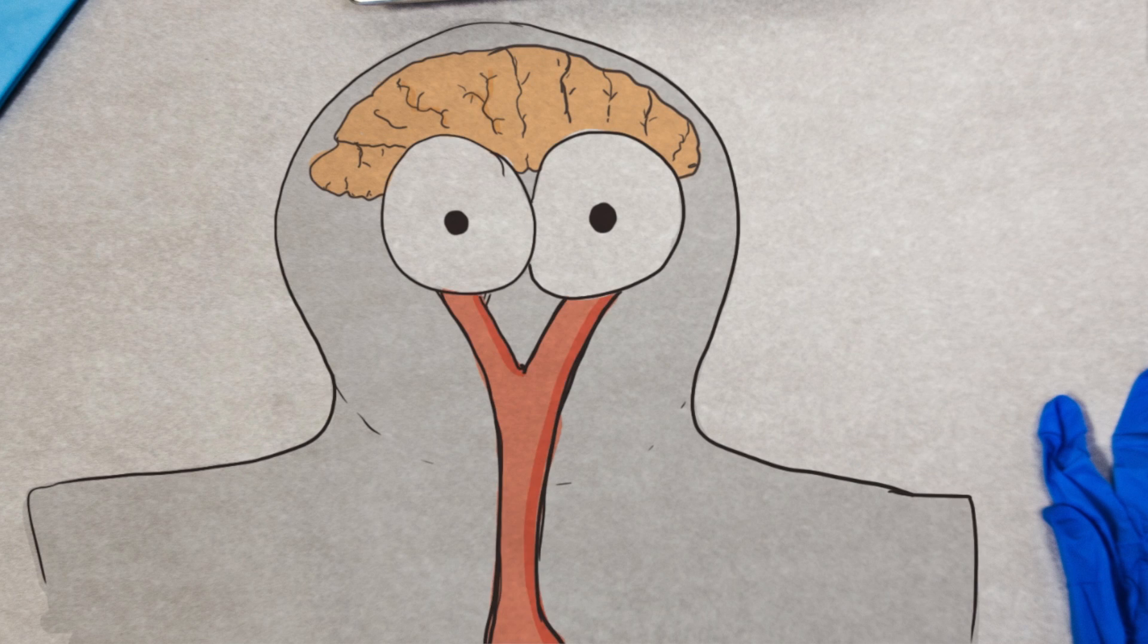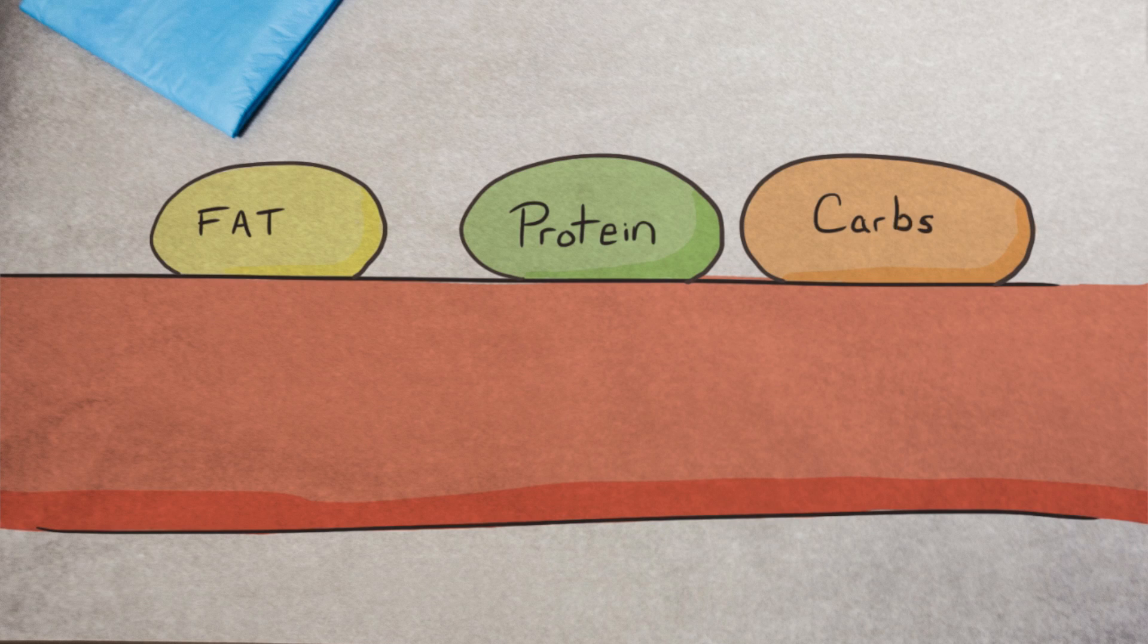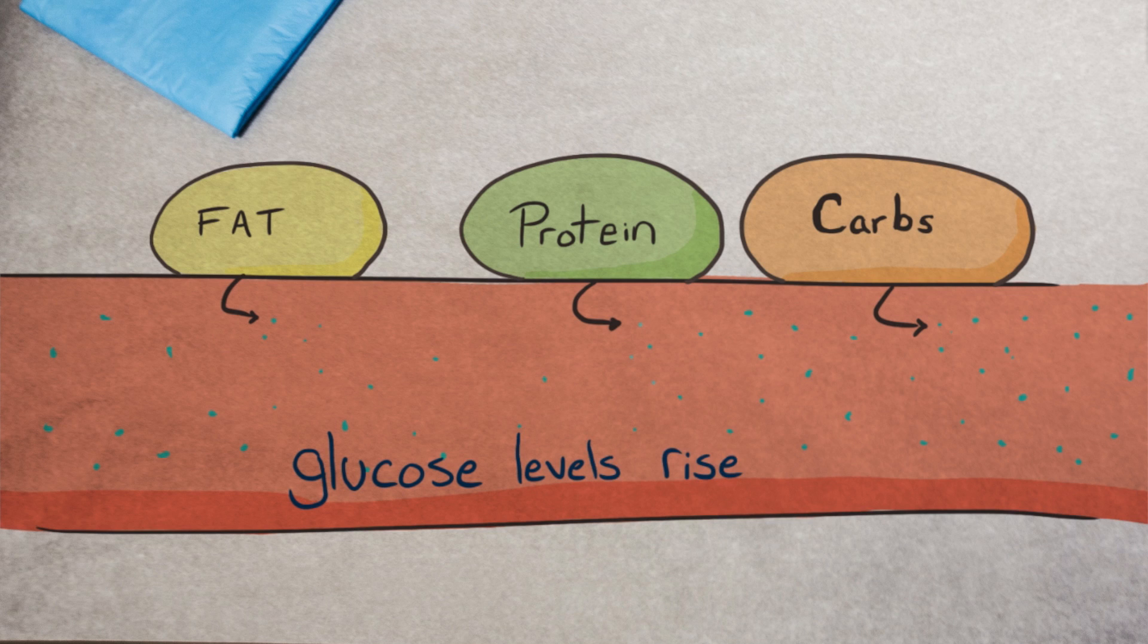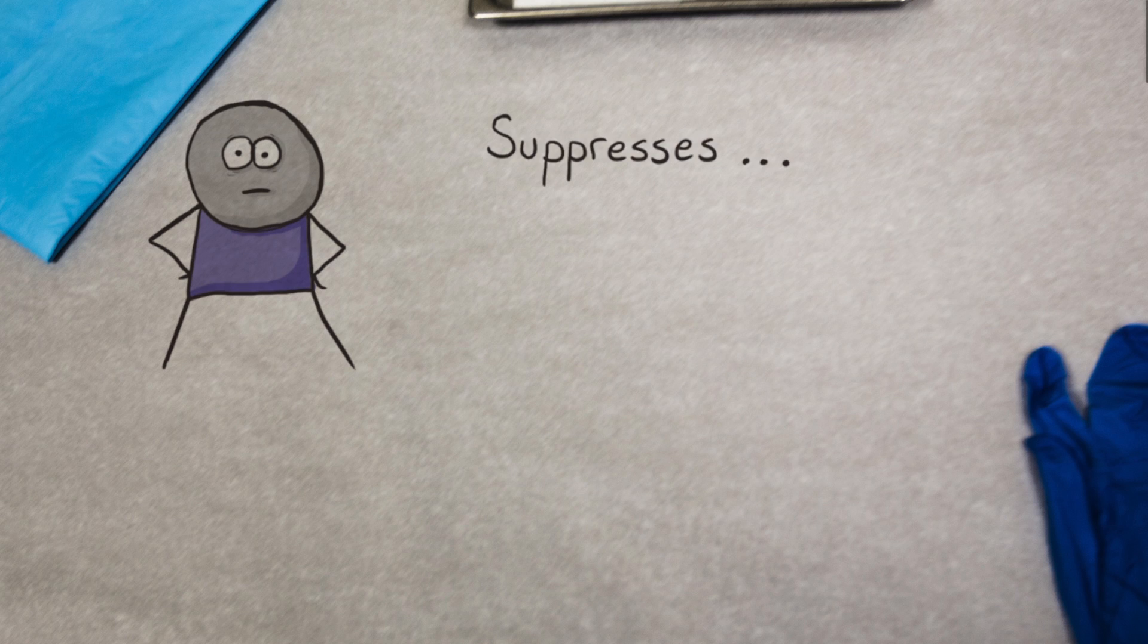It works like this. You want to get sugar to your brain, the most important thing, right? So the hormone stimulates the breakdown of fat, protein, and carbs into usable energy in the blood. That means your blood glucose levels rise. It also suppresses other activities that aren't vital in the immediate stressful situation, like the immune system.